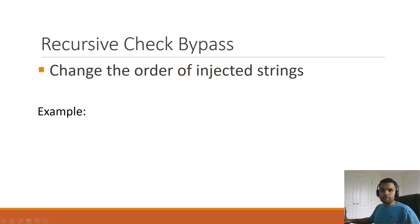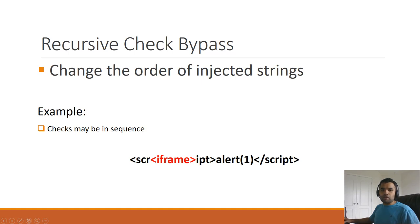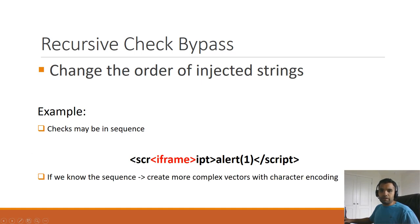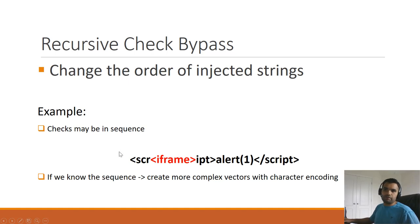If the filter performs recursive checks, you should always inspect whether it is still exploitable, because changing the order of how you inject the strings may work in your favor. It may be possible that the recursive checks are in sequence. As you can see in this string, it only looks for the script tag and only processes it in sequence — it does not restart from the beginning to check if there are no more malicious strings. So if we already know or can guess the sequence, we can bypass using this string.